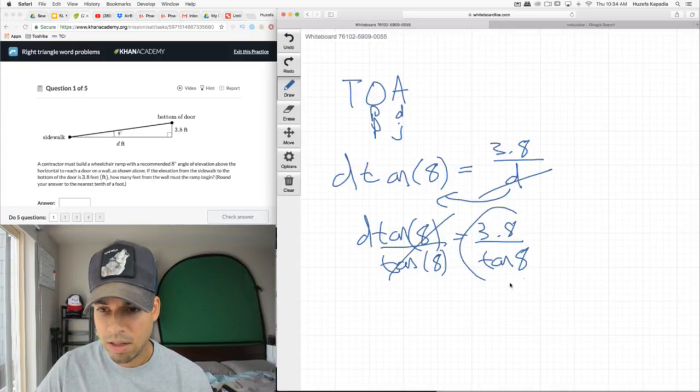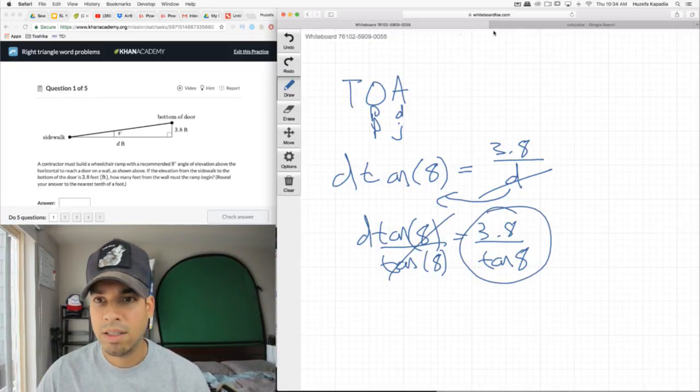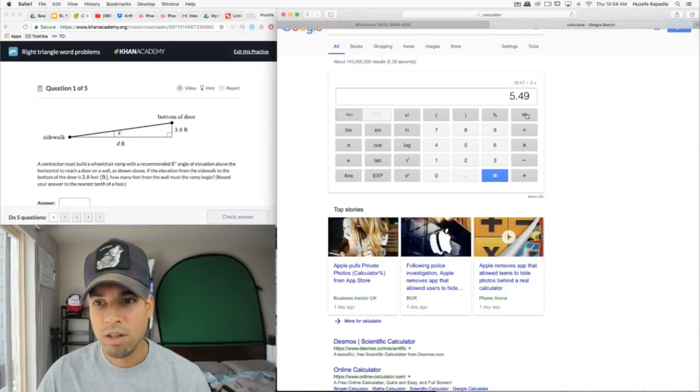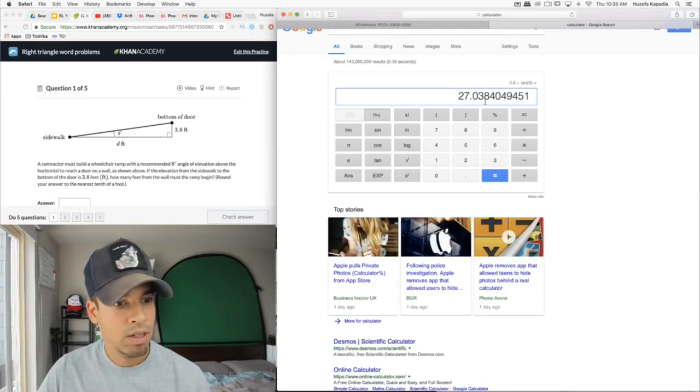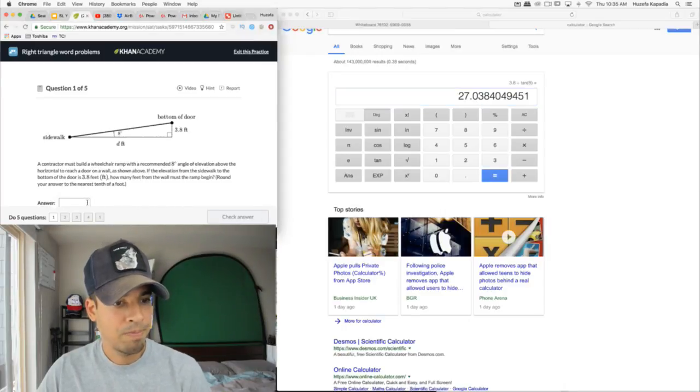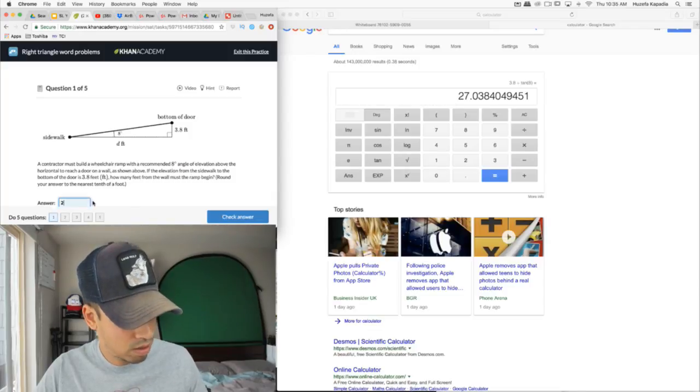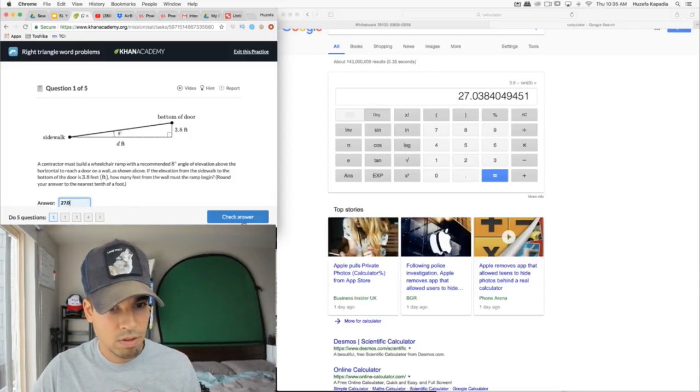This is a calculator problem, so let's do 3.8 divided by tangent of 8. We've got to make sure we're in degrees. And we get 27 rounded to the nearest tenth, 27.0. Let's see if that's correct. Yes, it's correct.